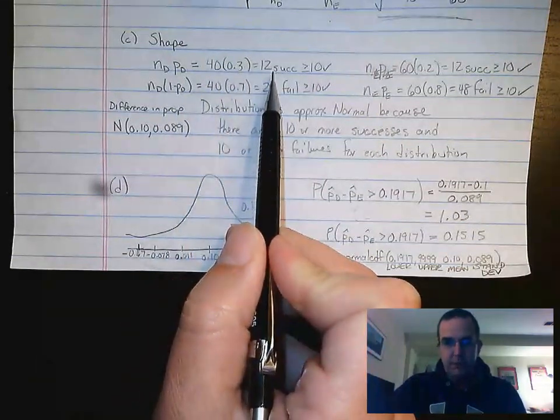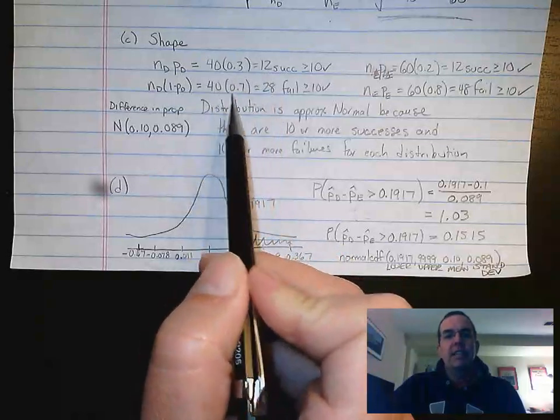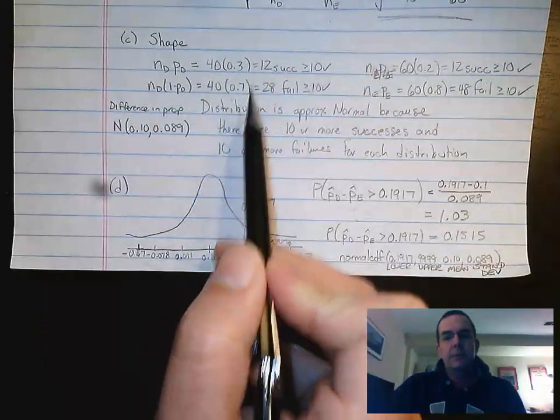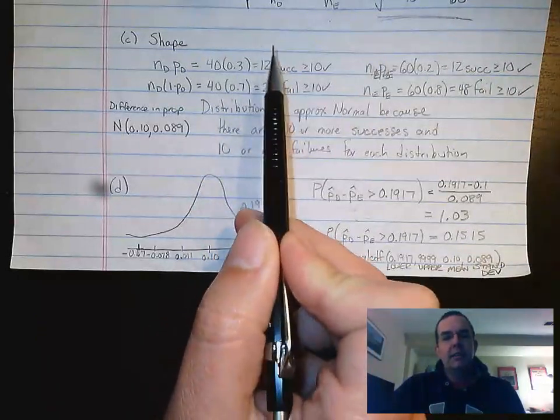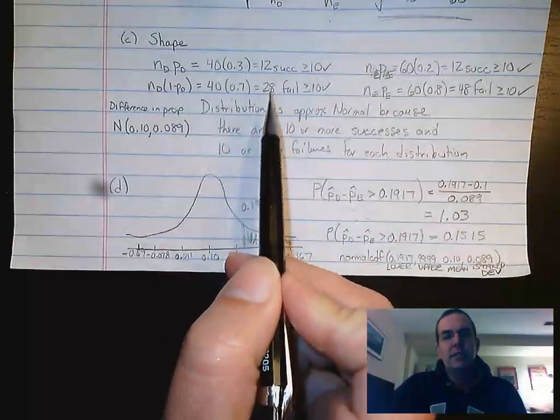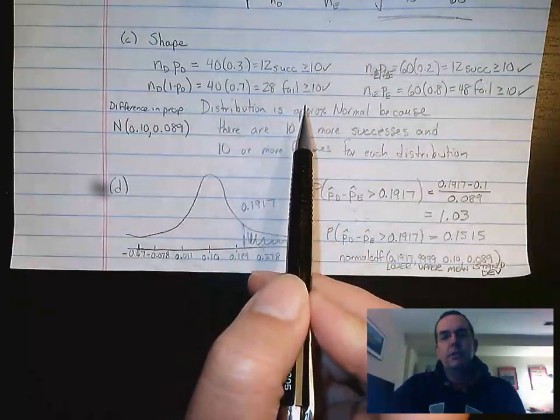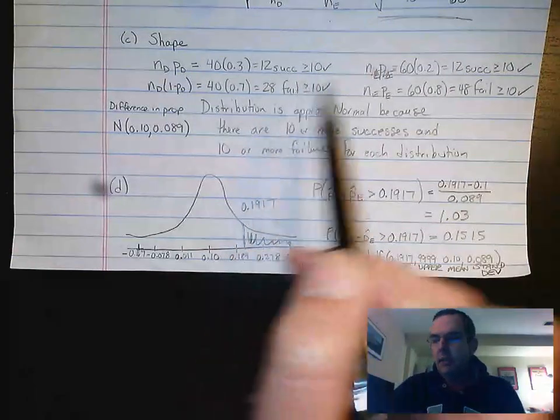40 times 0.3 gives me 12 successes. 40 times 0.7, which is the failure percentage complement, gives me 28. So for population D, I would expect 12 successes and 28 failures. Both of those are greater than or equal to 10. So I'm good there for D.